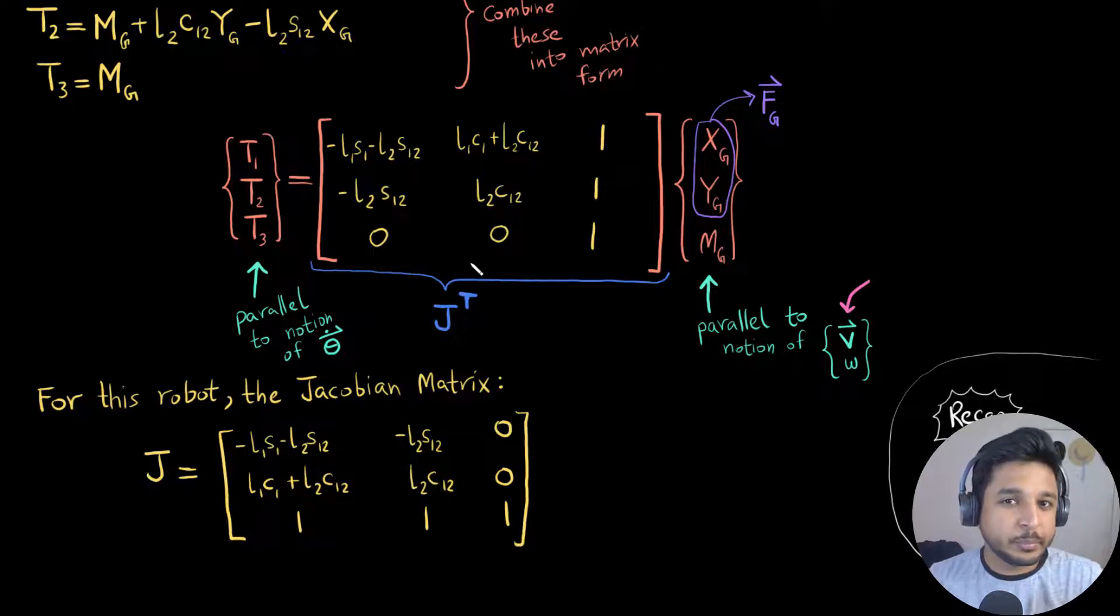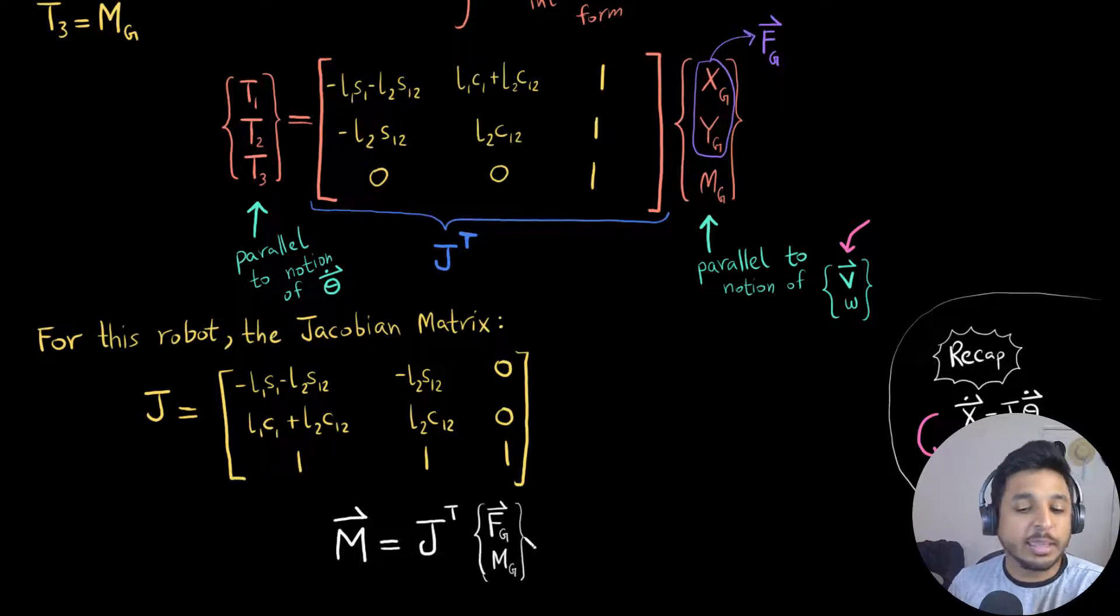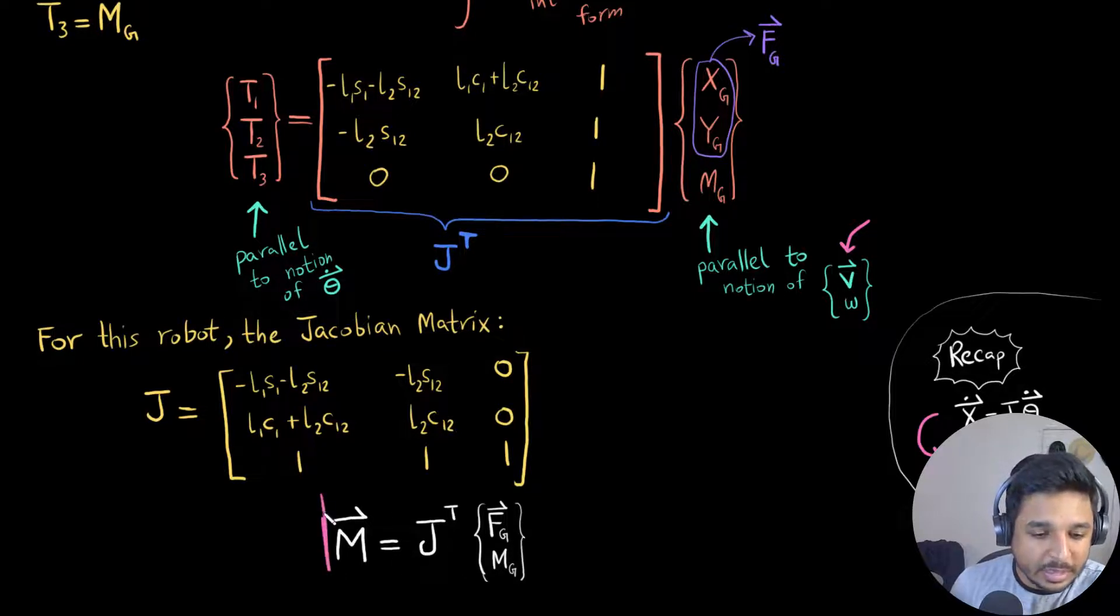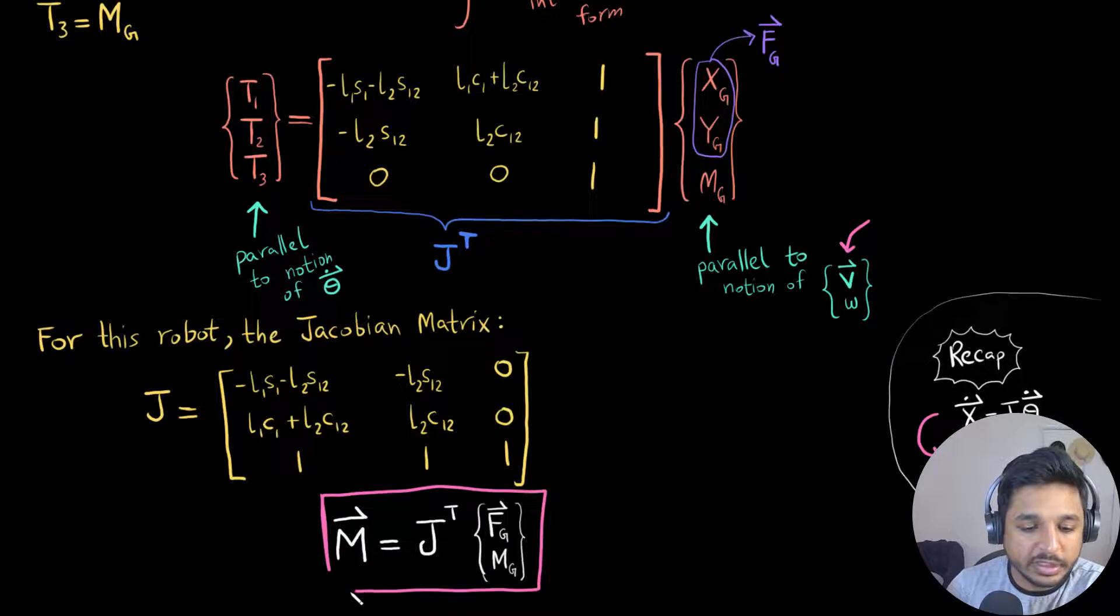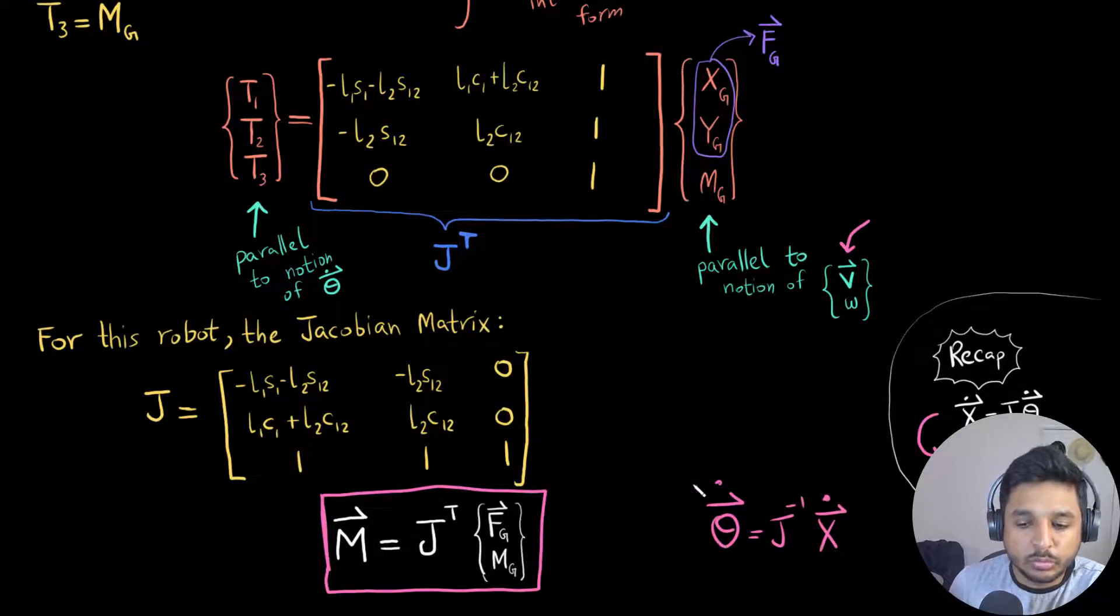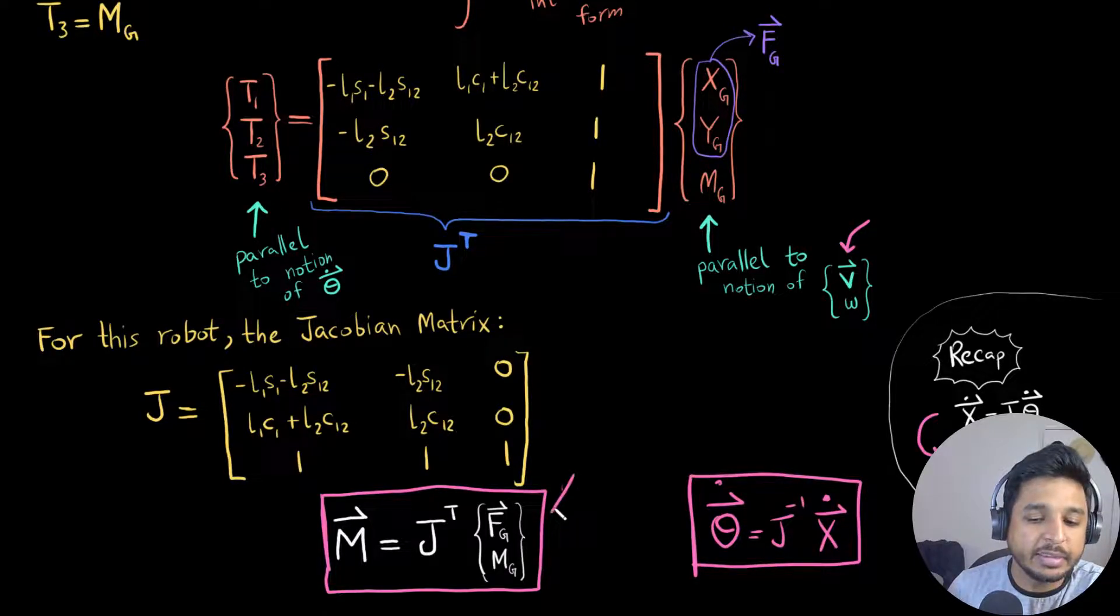So what is the practical application of this? I can write the m vector, which is my motor torques, to be equal to the Jacobian transpose times this vector, which is just the force exerted by the gripper and the moment exerted by the gripper. Now you should be seeing how similar this equation is with the equation that we previously derived, which was this. You see how similar these two equations are. You just need to keep these two equations in mind, and once you get the Jacobian, you can easily get this.